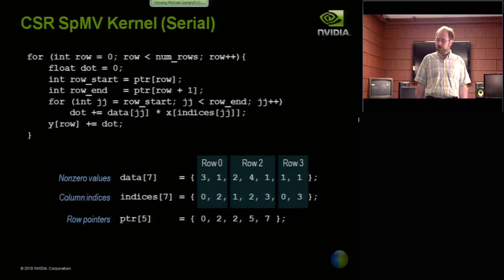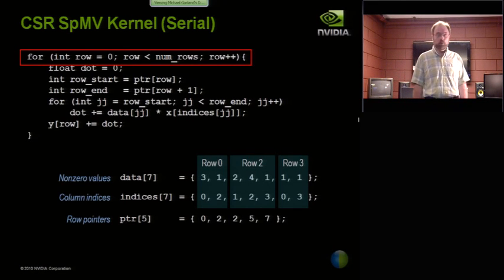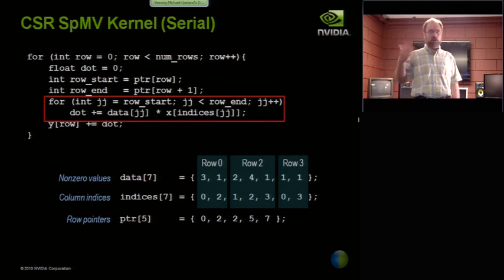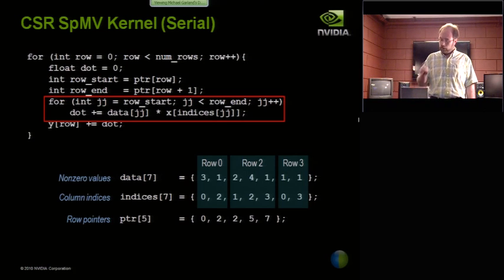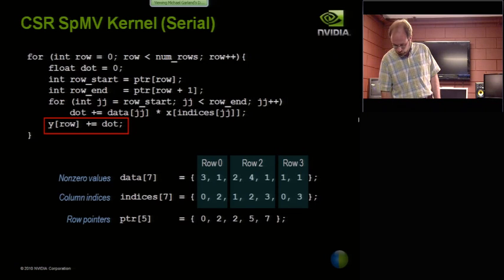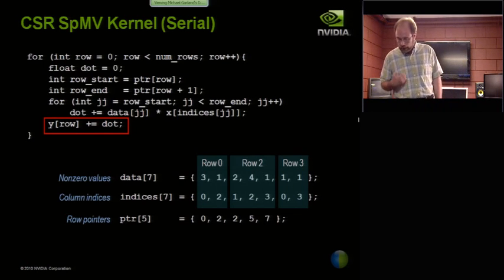This is sort of a canonical way that you would perform the matrix vector product using this data representation. There's a loop at the outside which loops over every row of the matrix. For every row, we figure out where it begins and ends in that data layout. Then I just loop over every entry in that row and accumulate the appropriate non-zero times the appropriate entry of x. When I've accumulated all of them, I write it out into the output matrix y. So the natural question is how can I take the sequential code and parallelize this?